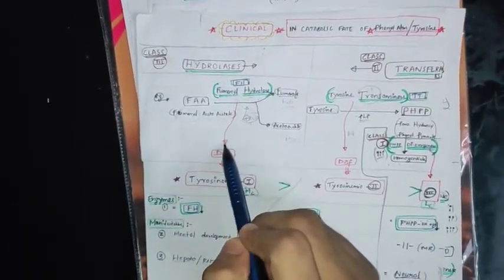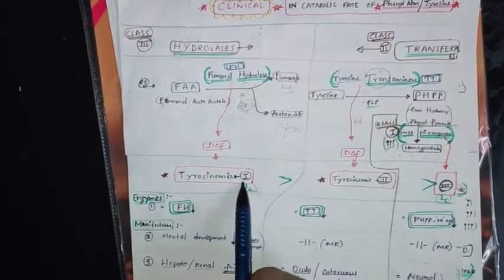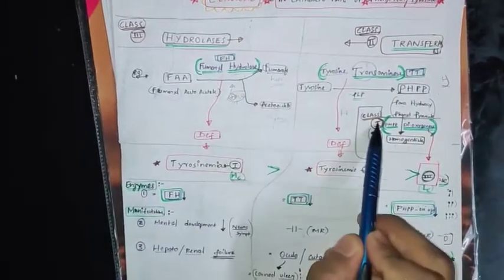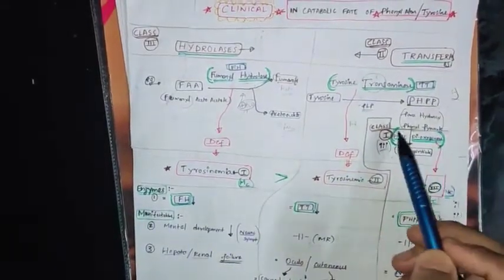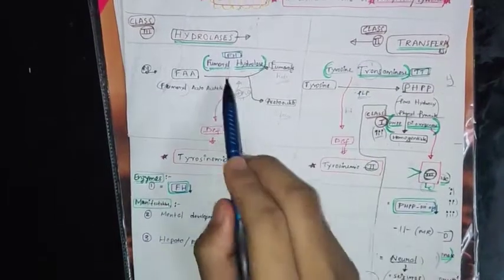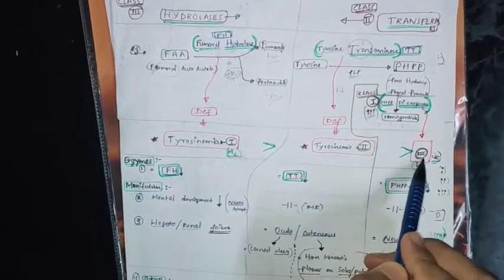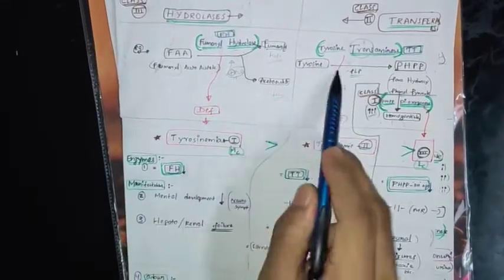When these three enzymes are deficient, we get three diseases: Tyrosinemia type 1, 2, and 3. You can remember simply: Class 3 (hydrolase) → Tyrosinemia 1; Class 2 (transferase) → Tyrosinemia 2; Class 1 (dioxygenase) → Tyrosinemia 3. It's the reverse order — three gives you one, two gives you two, one gives you three.